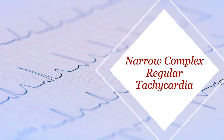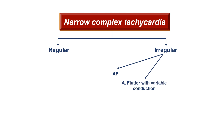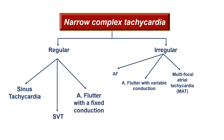Let's cover the differential diagnosis. Narrow complex tachycardias split into regular and irregular. The irregular ones are AF, atrial flutter with variable conduction, and multifocal atrial tachycardia. The regular ones are sinus tachycardia, SVT, and atrial flutter with fixed conduction. Since our patient has a regular rhythm, the differential is sinus tachy, SVT, or atrial flutter with fixed conduction.